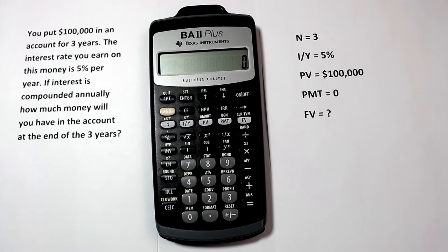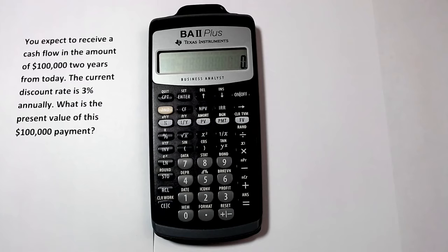Now let's assume that you expect to receive a cash flow in the amount of $100,000 two years from today. The current discount rate is 3% annually. What is the present value of this $100,000 payment?